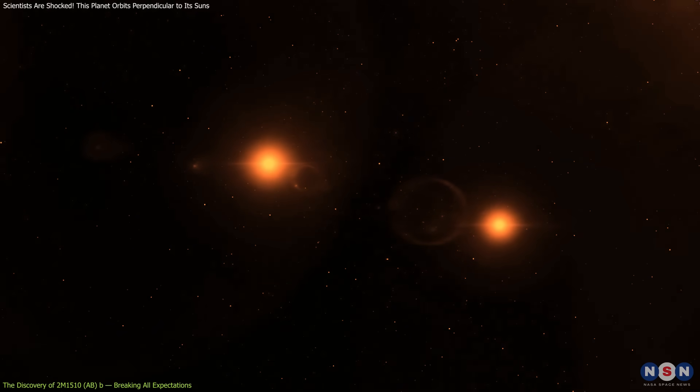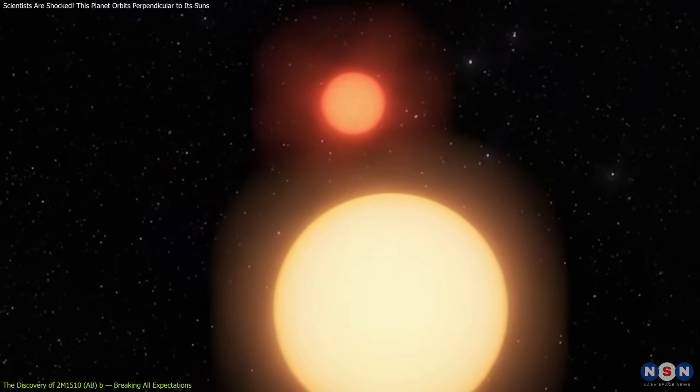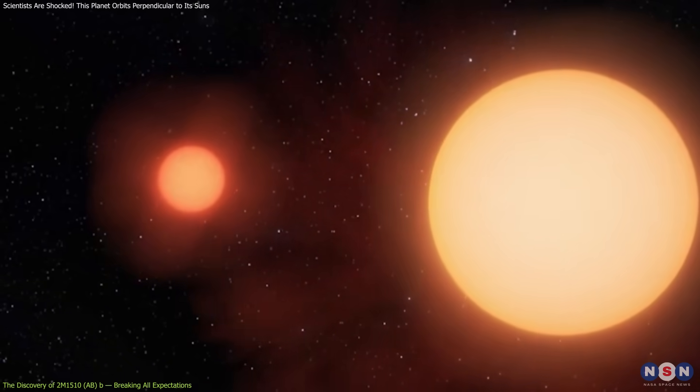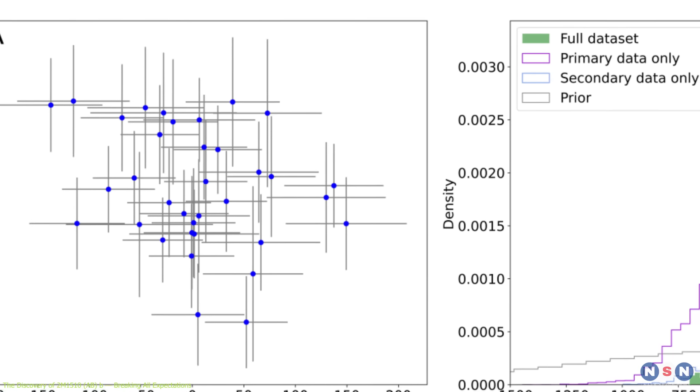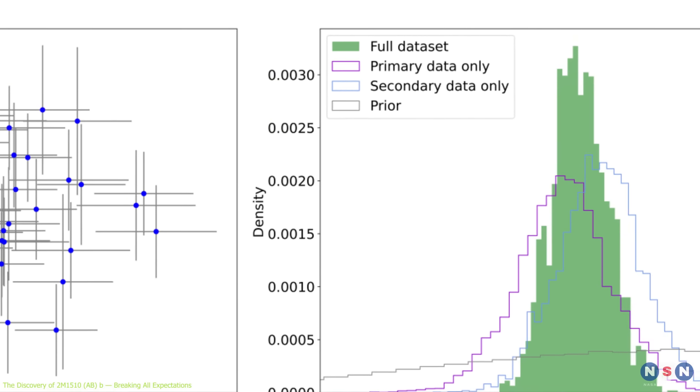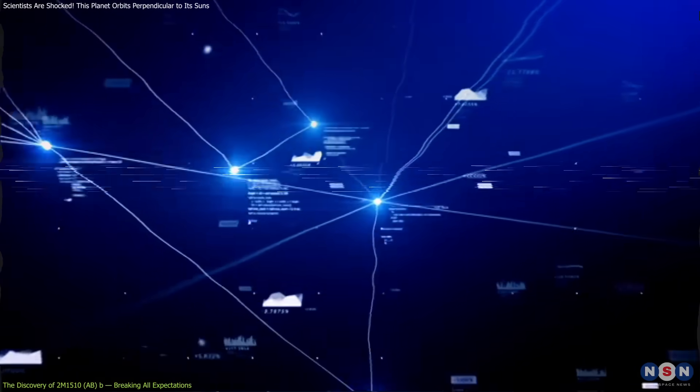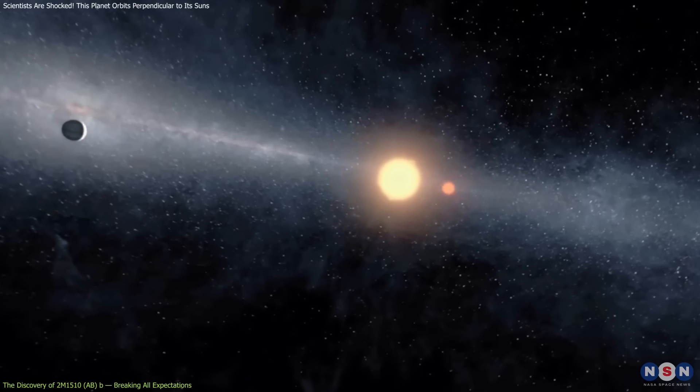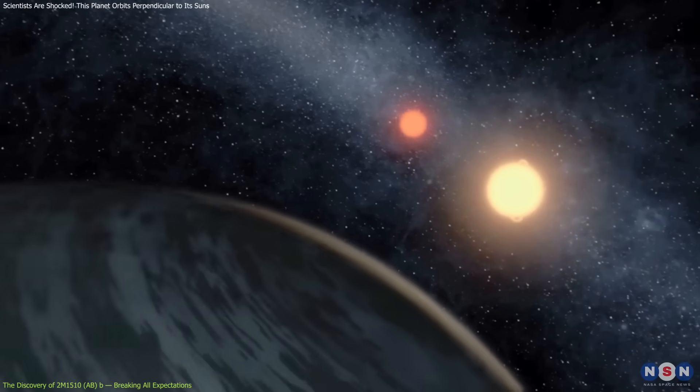The orbital parameters of the two brown dwarfs didn't add up. Their motion exhibited strange wobbles and perturbations that couldn't be explained by their gravitational interaction alone. Something unseen was tugging at them. Thomas Baycroft and his team meticulously analyzed the data, considering all possible explanations — additional stars, background interference, even data error. But none of these fit. The only viable solution was the presence of a third object, a planet, exerting its own gravitational influence.